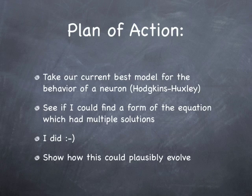Okay, so here's how I did it, the plan of action. You take our best model for the behavior of a neuron, the so-called Hodgkin-Huxley equations, and see if I could find a form of the equation which had multiple solutions. And I found one. But not only that, I wanted to show how it could plausibly evolve, how this could come about.